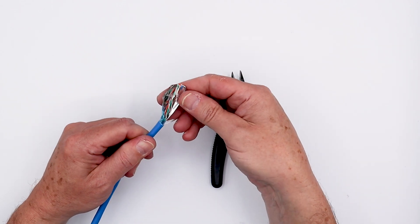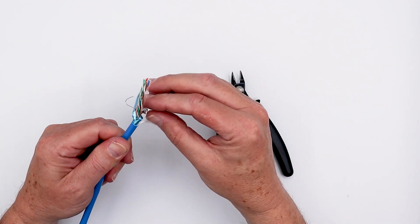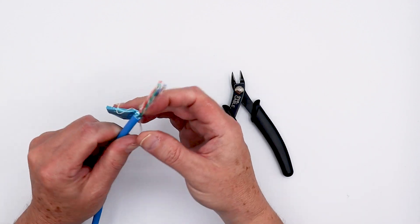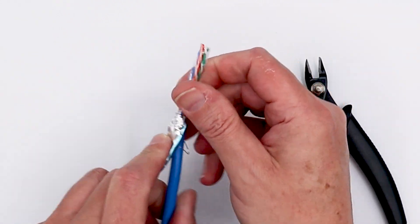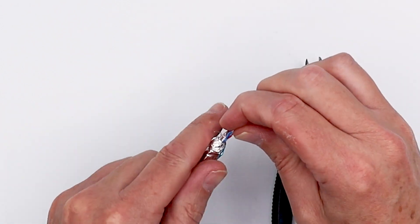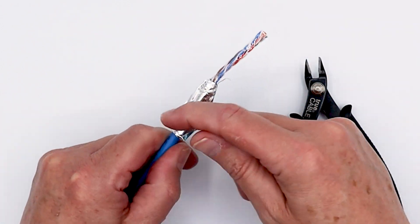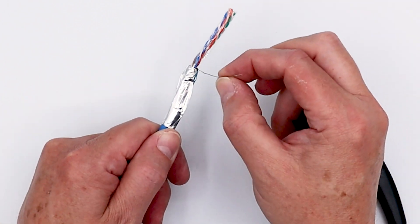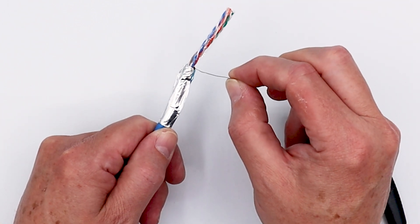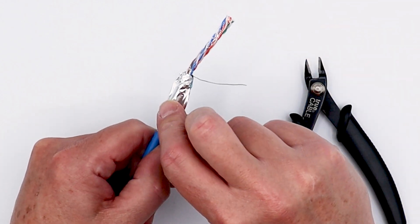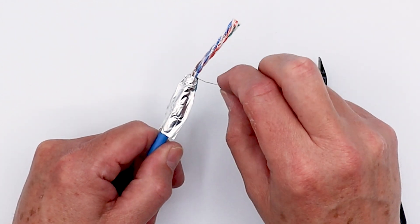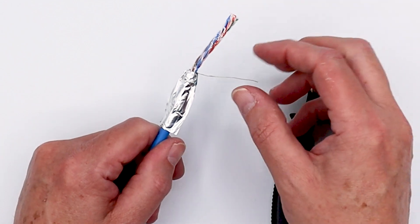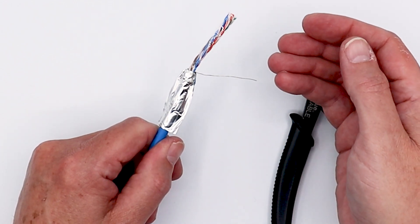Once you peel back this foil shield, you're going to notice that there's also a tinned copper drain wire, and this drain wire makes contact with the inside of the cable shield all the way along its length. This serves primarily as the ESD drain ground, and then the shield is bonded with this wire. Bonded means it's making a low impedance electrical contact.